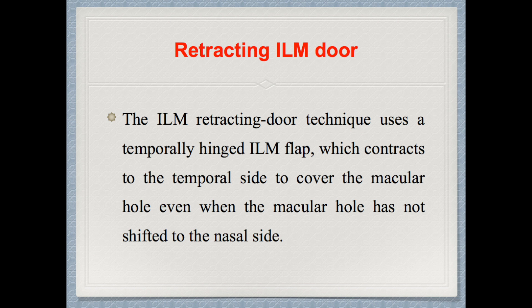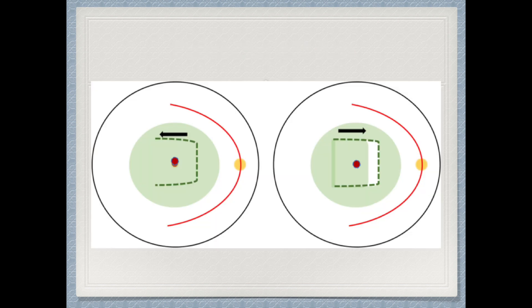The third technique is the retracting ILM door. The ILM retracting door technique uses a temporally hinged ILM flap which contracts to the temporal site to cover the macular hole, even though the macular hole has not shifted to the nasal site. The ILM is peeled from the nasal to the temporal site, and then left to retract back to cover the macular hole. This is mostly relevant to myopic macular holes.